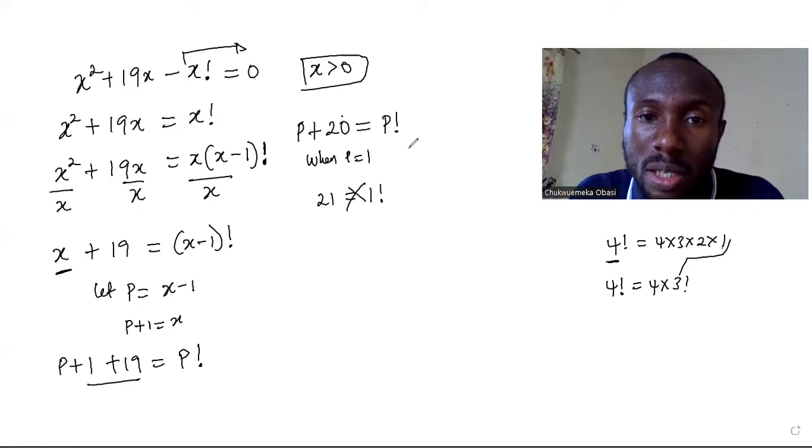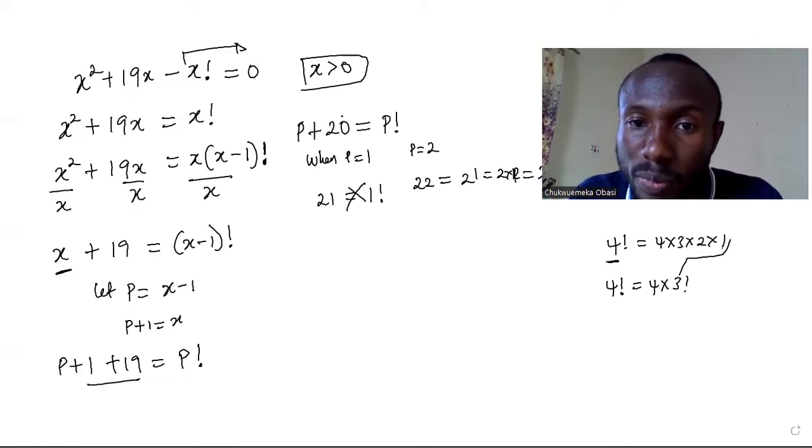When p is equal to 2, we have 2 plus 20, that will give us 22 is equal to 2 factorial, which is the same as 2 times 1, which is still 2. So that is not still correct. So when p is 3, we still fail.